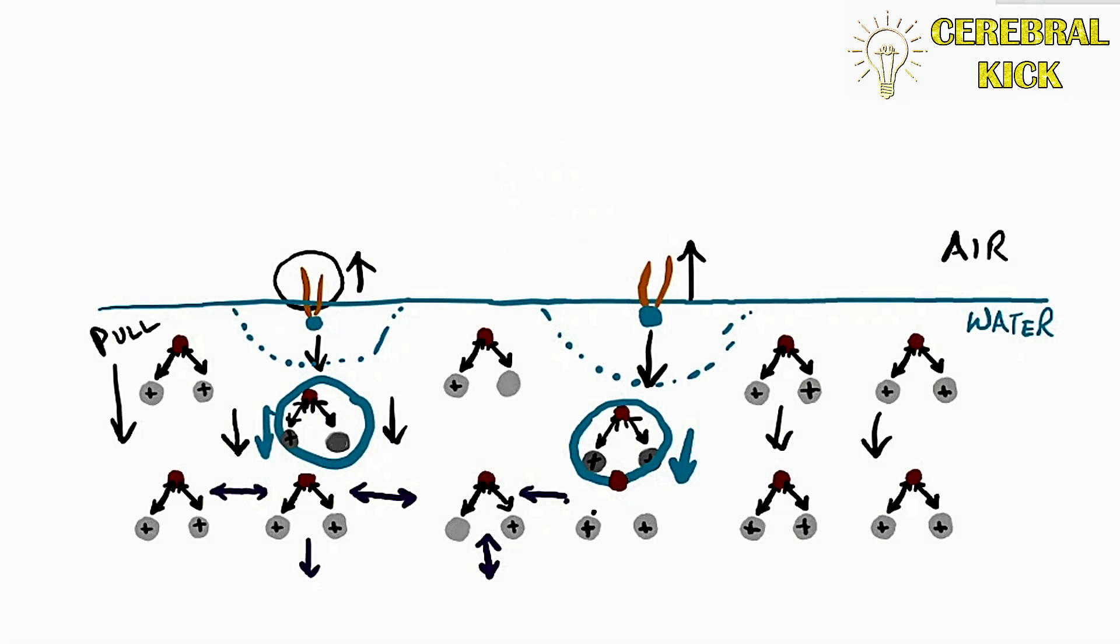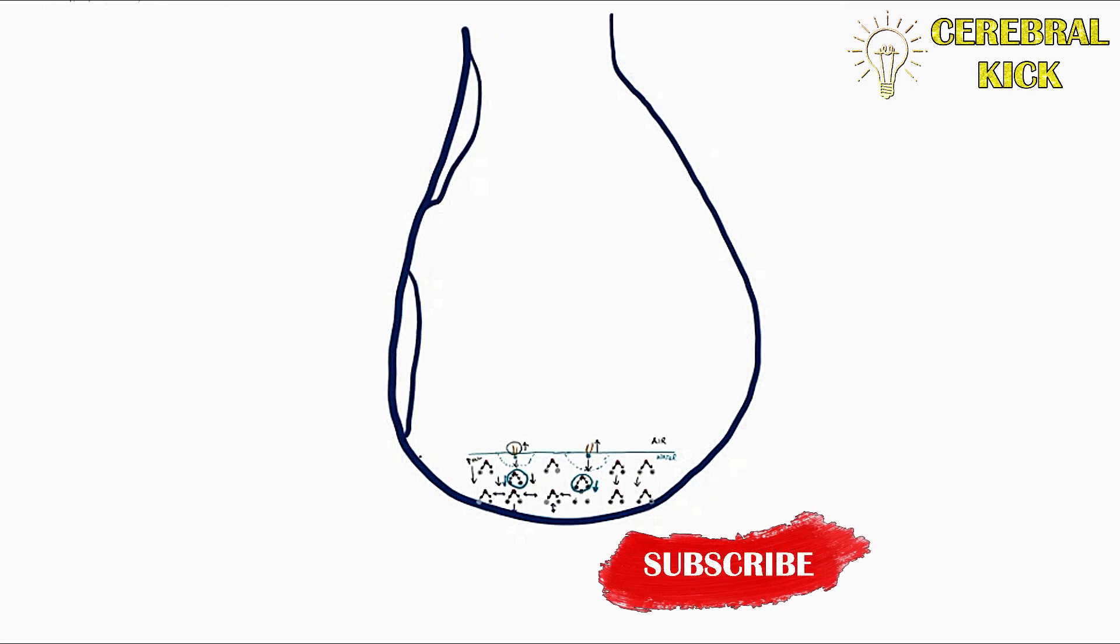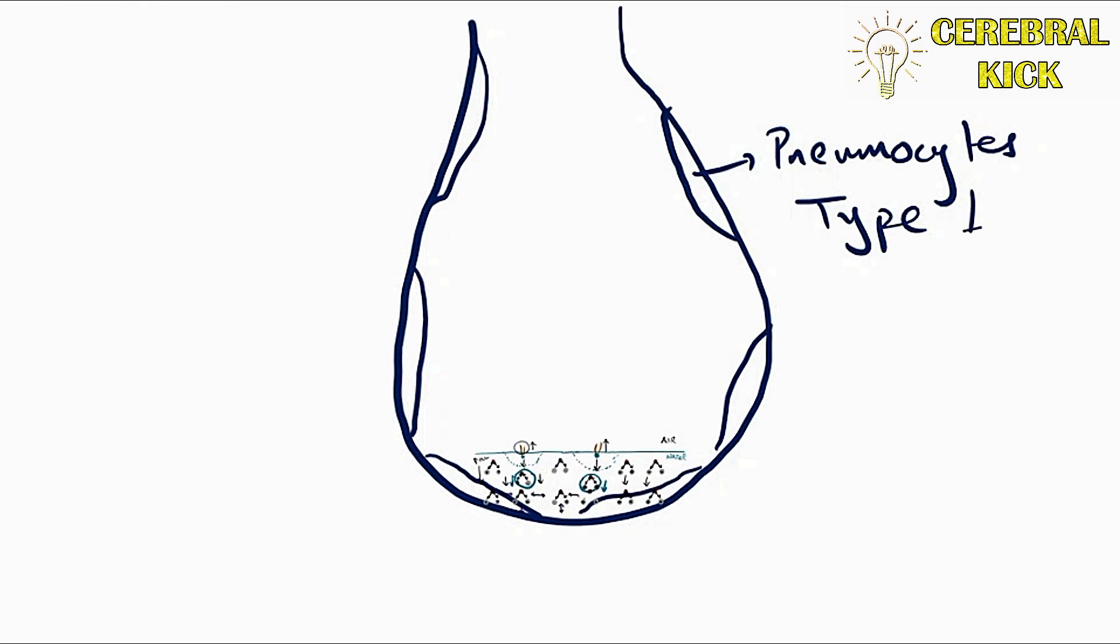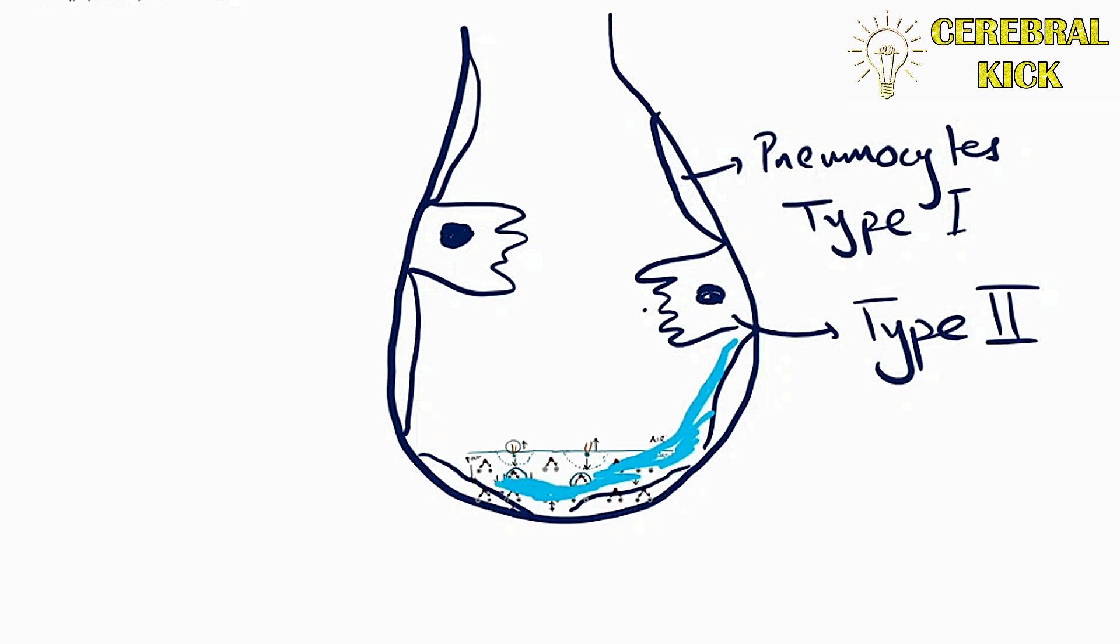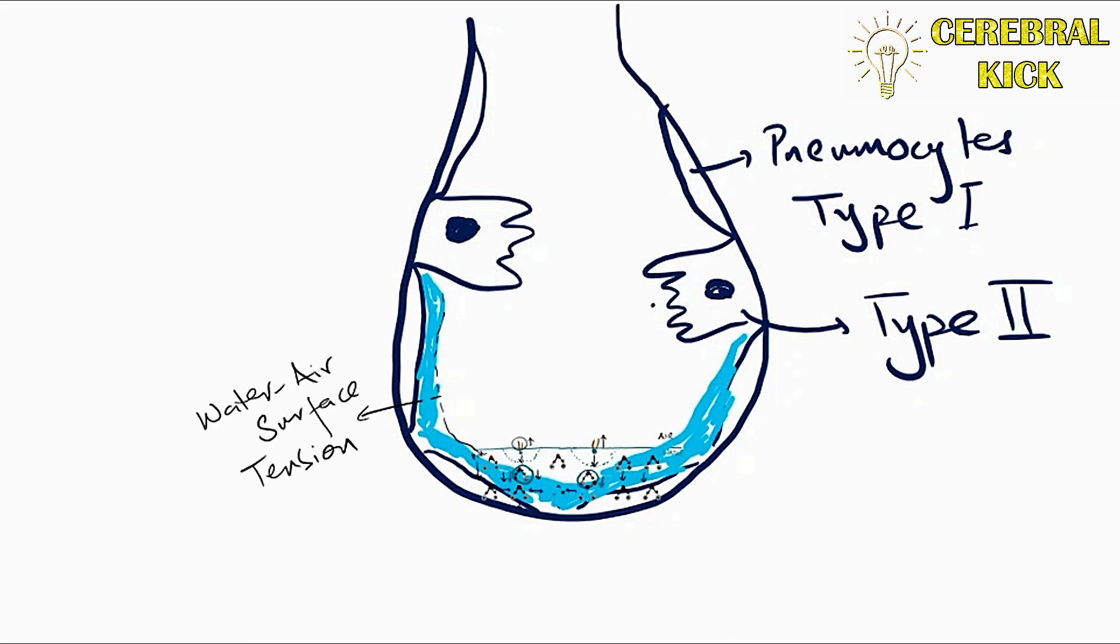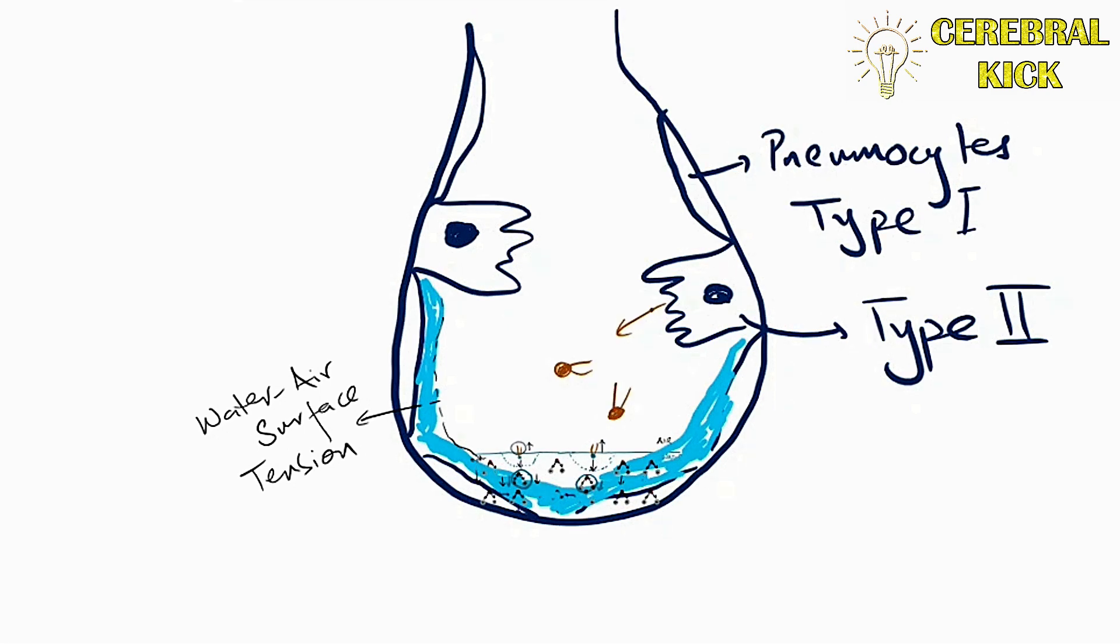Let's see graphically how this water lining behaves in the alveolus. The surface tension tends to drive the water molecules inside and inwards. As a result, alveolar collapse might occur. But type 2 pneumocytes produce surfactant, and this surfactant cancels out the surface tension exerted by the water lining or the water air interface.